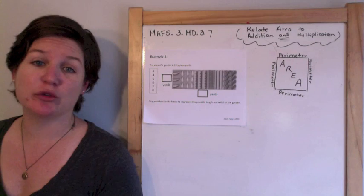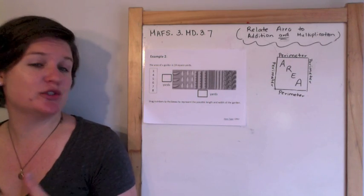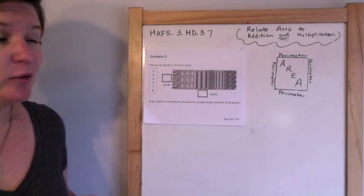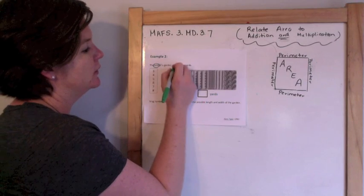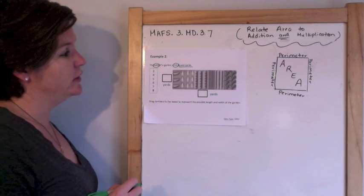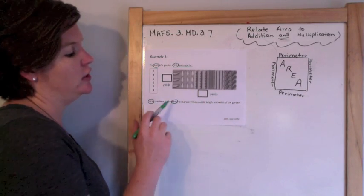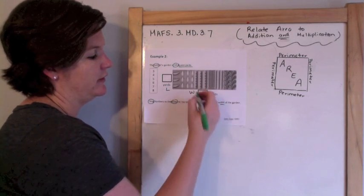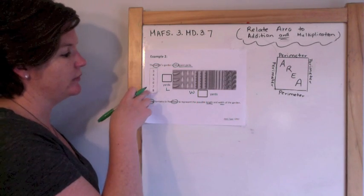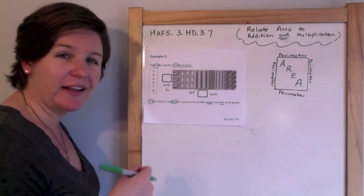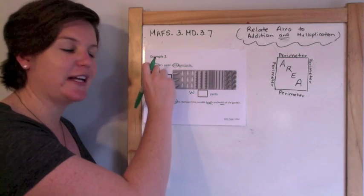For example 2, we have a GRID item type, which stands for graphic response item display. In the past I've said I don't know exactly how they're going to grade these types of items, but I want to make sure I'm including what you could possibly see on this test. So let's take a look. The area of a garden is 24 square yards. Drag numbers to the boxes to represent the possible length and width of the garden. When they say drag, they're referring to using a computer mouse to click and drag the numbers into the correct spot.